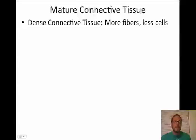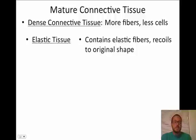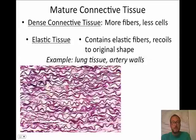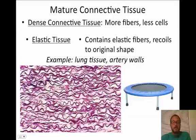The third type of dense connective tissue is elastic tissue, which contains elastic fibers and recoils to its original shape. You find this in your lungs and artery walls — as your lungs inflate, the elastic tissue causes elastic recoil, returning the tissue to its original shape. On a microscope slide it looks similar to dense irregular, but you see dark elastic fibers. A good analogy is a trampoline — it comes back to its original shape after you jump on it.